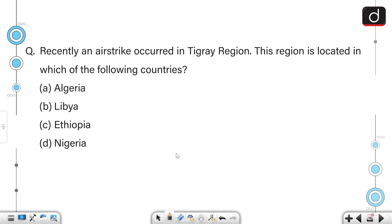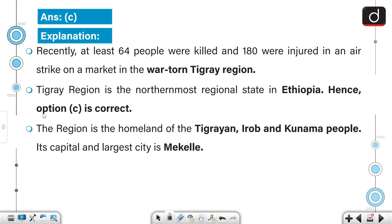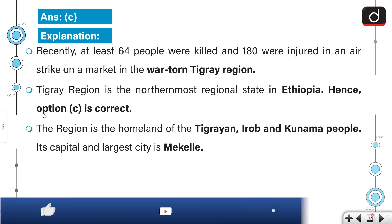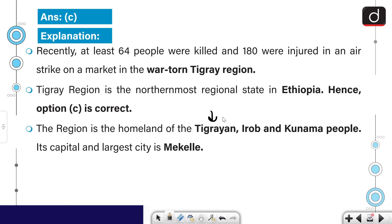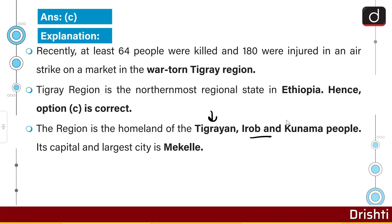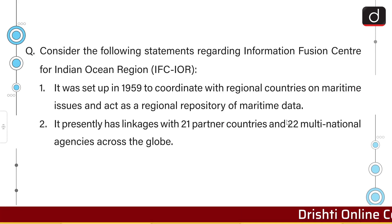Recently, an airstrike occurred in the Tigray region. This region is located in which of the following countries? It is located in Ethiopia. Recently, at least 64 people were killed and 180 were injured in an airstrike on a market in Warti in the Tigray region. It is the northernmost region of Ethiopia and the homeland of the Tigrean, Arab, and Kunama people. The capital and largest city is Mekelle.